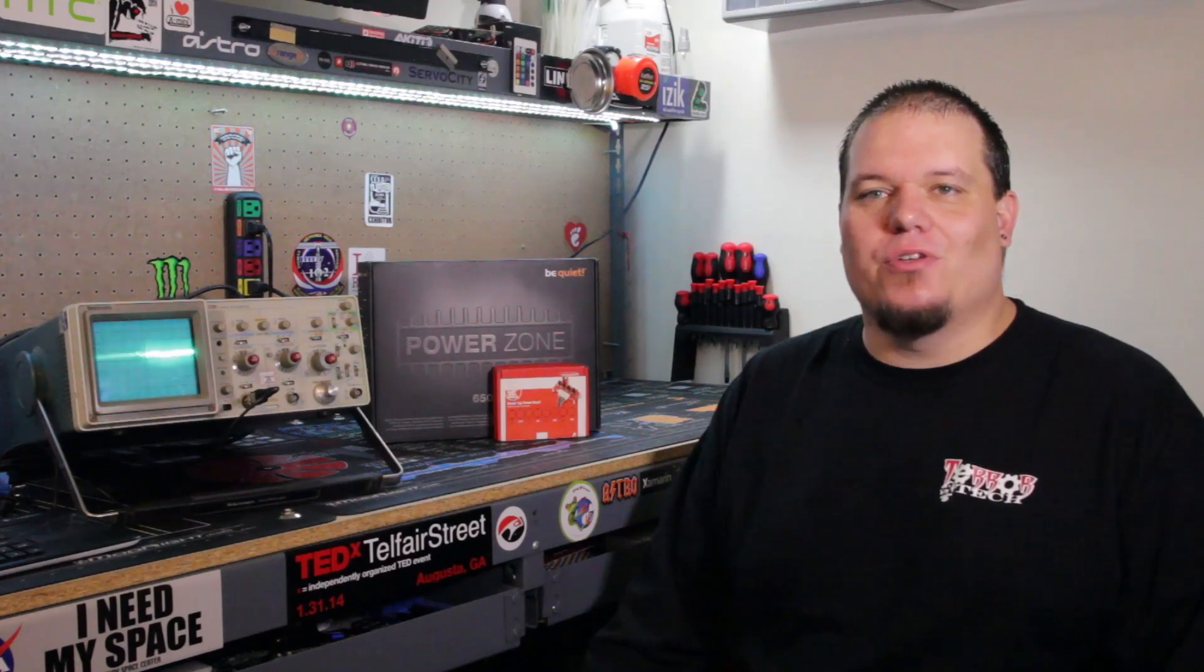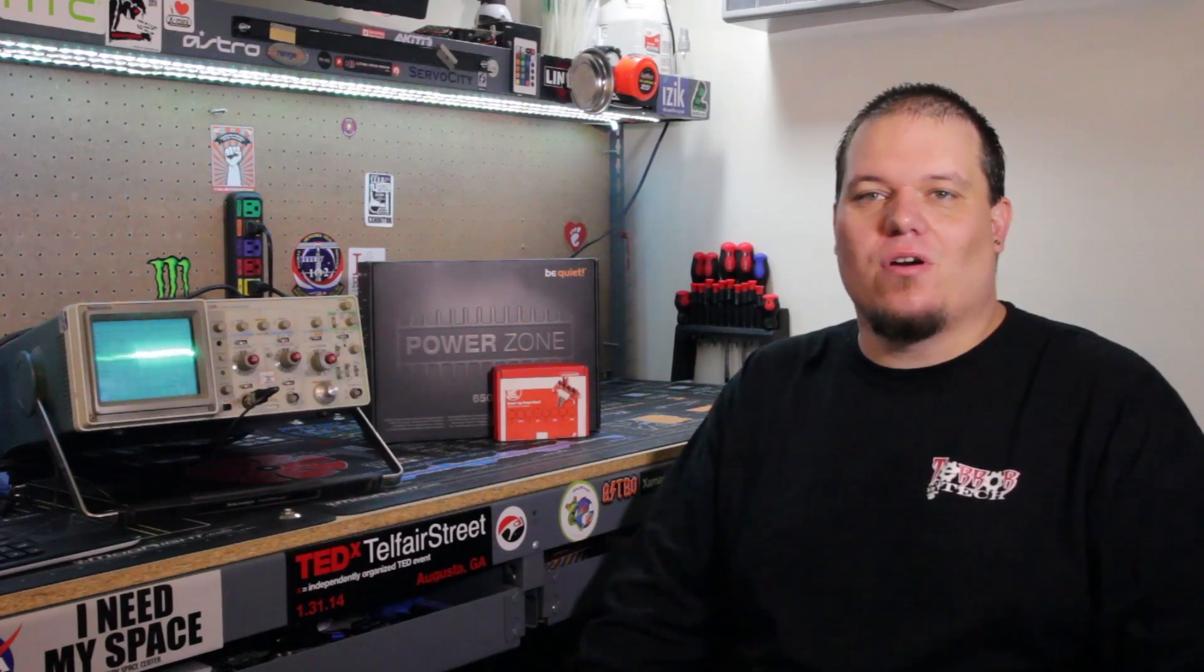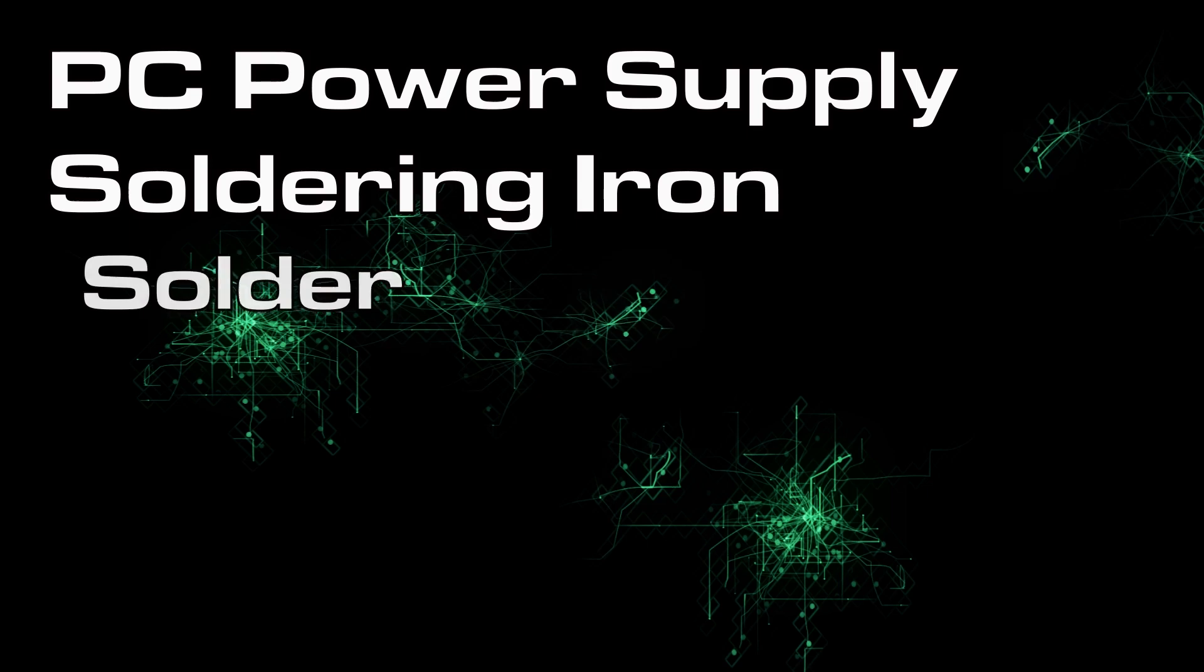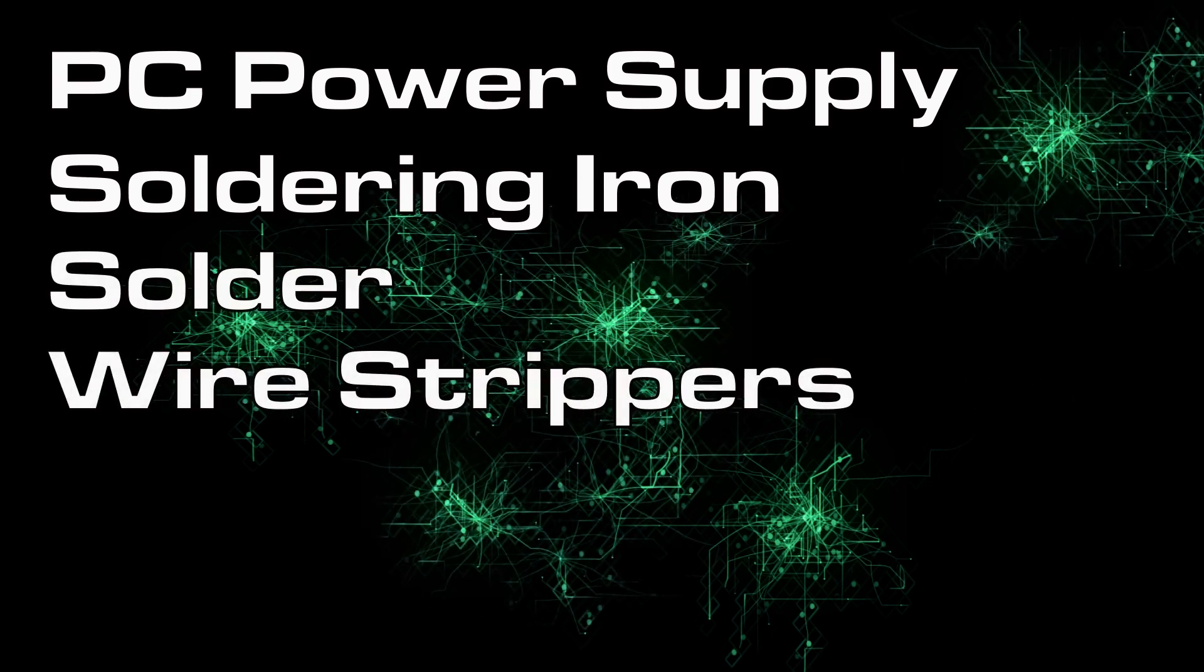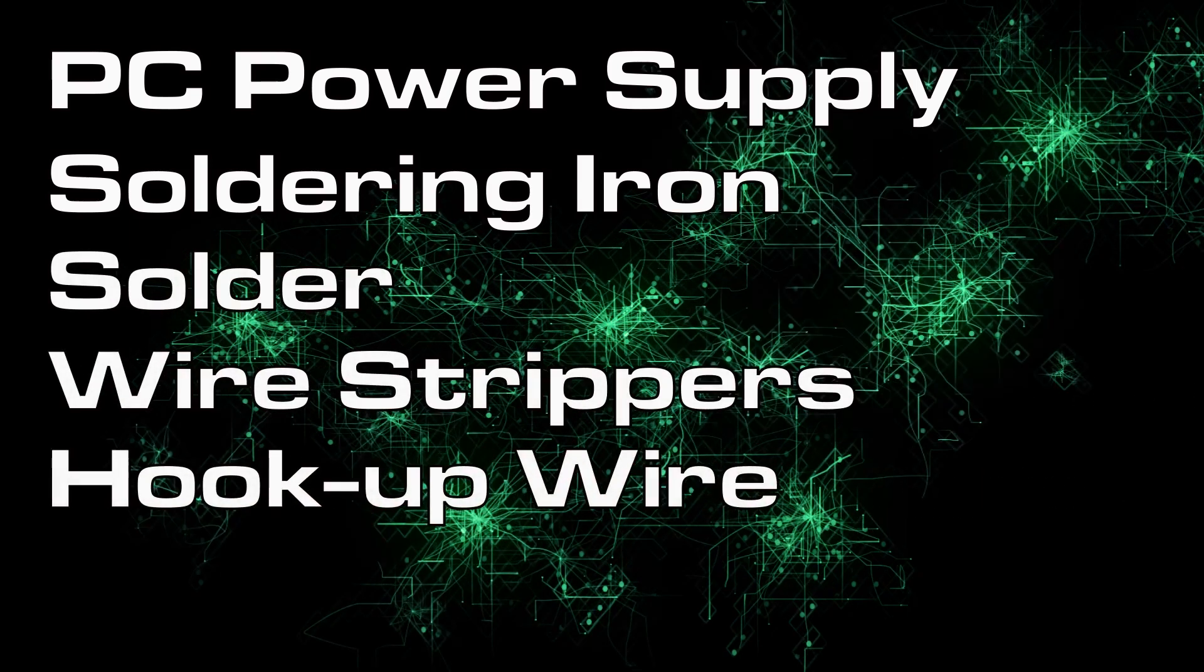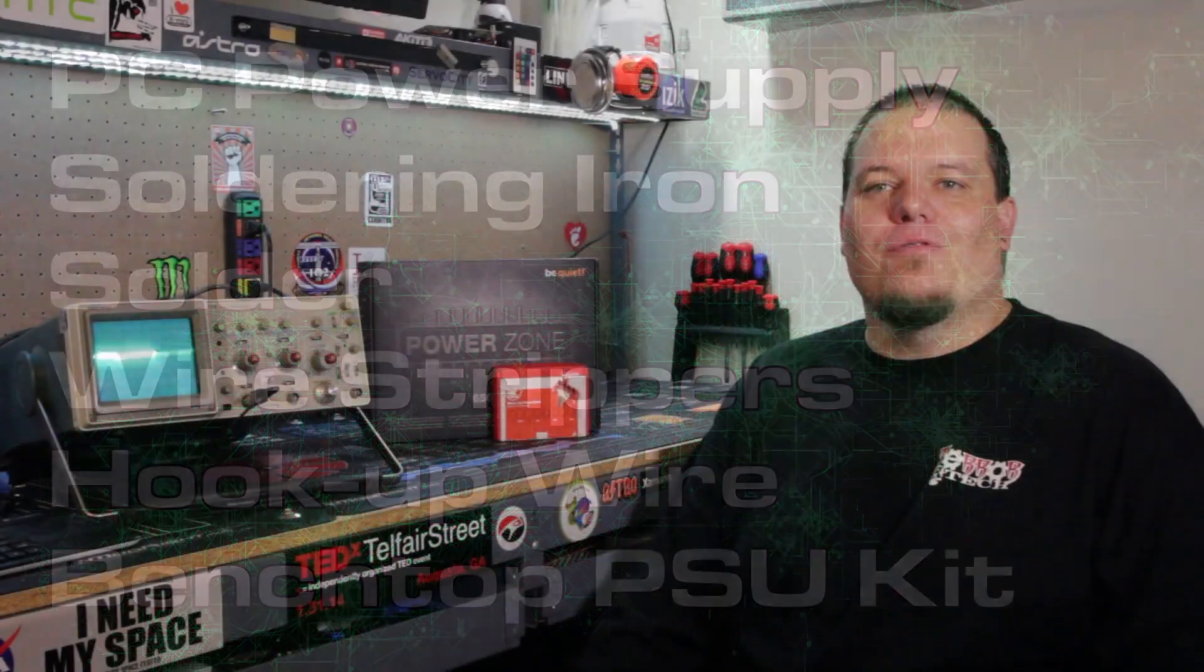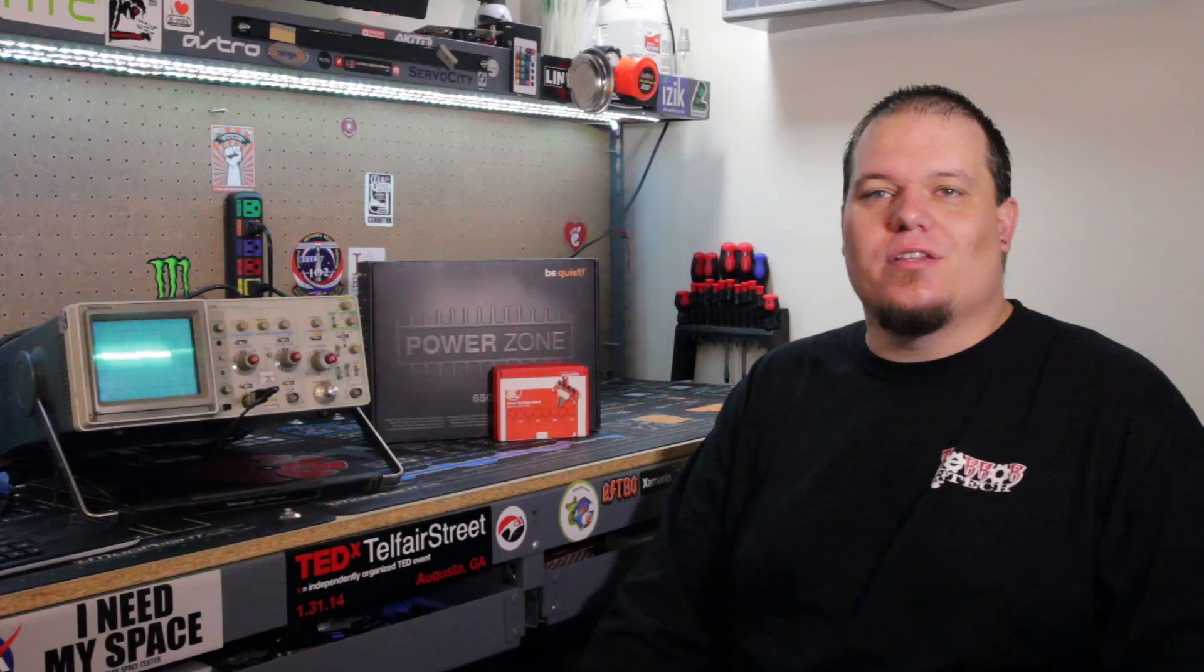To get started you're going to need a power supply from an old PC, a soldering iron, solder, wire strippers, hookup wire, and a benchtop power board kit from SparkFun Electronics. You can find links to the products used today in this video's show notes, so let's gather up all of our parts and head over to the workbench.